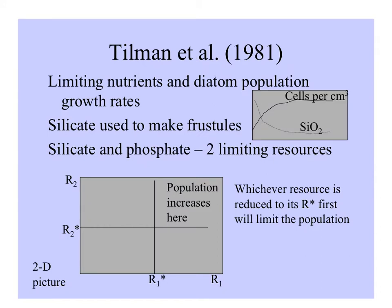Dave Tilman did some neat work to show that two different resources can limit populations together. Looking at the growth of diatoms — tiny phytoplankton with silica frustules, like little petri dishes — they use silicate to make those structures. So silicate and phosphate both influence the growth rate of diatoms. In the upper corner, the Monod-type equation shows how the availability of silicon dioxide (silicate) is limiting to growth.